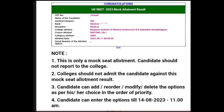Then college allotted — which college is allotted to you — then course allotted, category allotted, allotted date, serial number of the allotted option. So all this will be given. And also below you can see a note: this is only a mock seat allotment. Candidate should not report to the college. Colleges should not admit the candidate against this mock seat allotment result. Then the candidate can add, reorder, modify, delete the options as per their choice in the order of priority, and can enter options till 14th August till 11 AM.